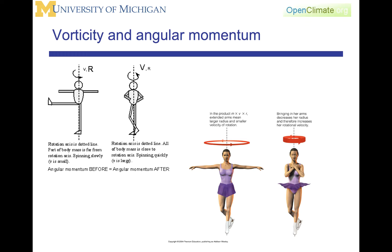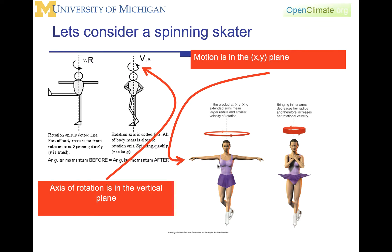We will see this same type of phenomenon in the atmosphere. For example, if a hurricane grows in its diameter, its winds will decrease. Likewise, if the hurricane becomes very compact, its winds are likely to increase. An important concept to note is that the motion is in the XY plane, but the rotation is around the vertical axis. Going back to the original definition of vorticity, the motion will be in one plane and the rotation will be in an axis orthogonal to that plane.